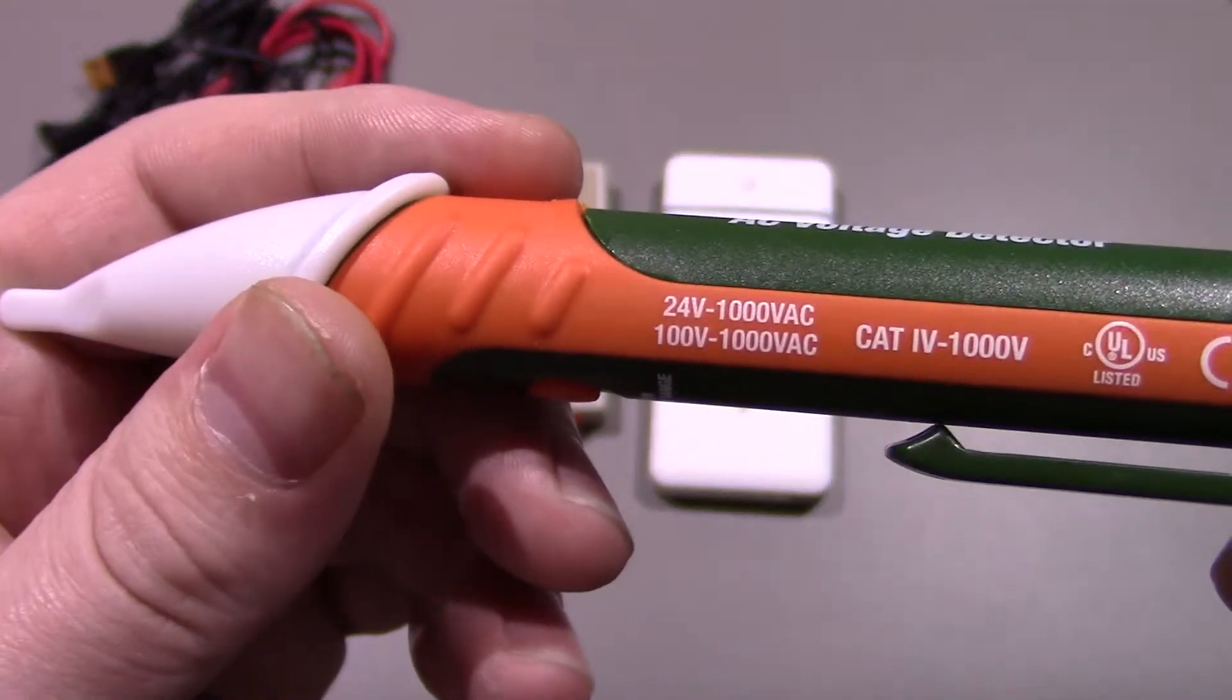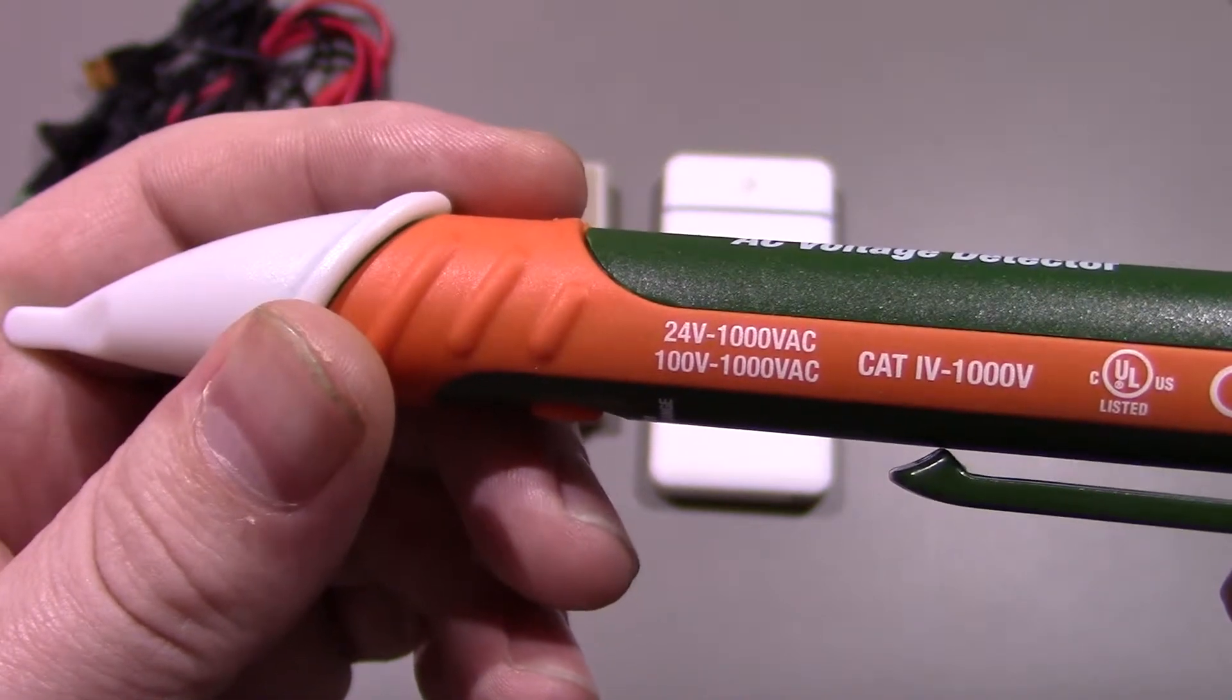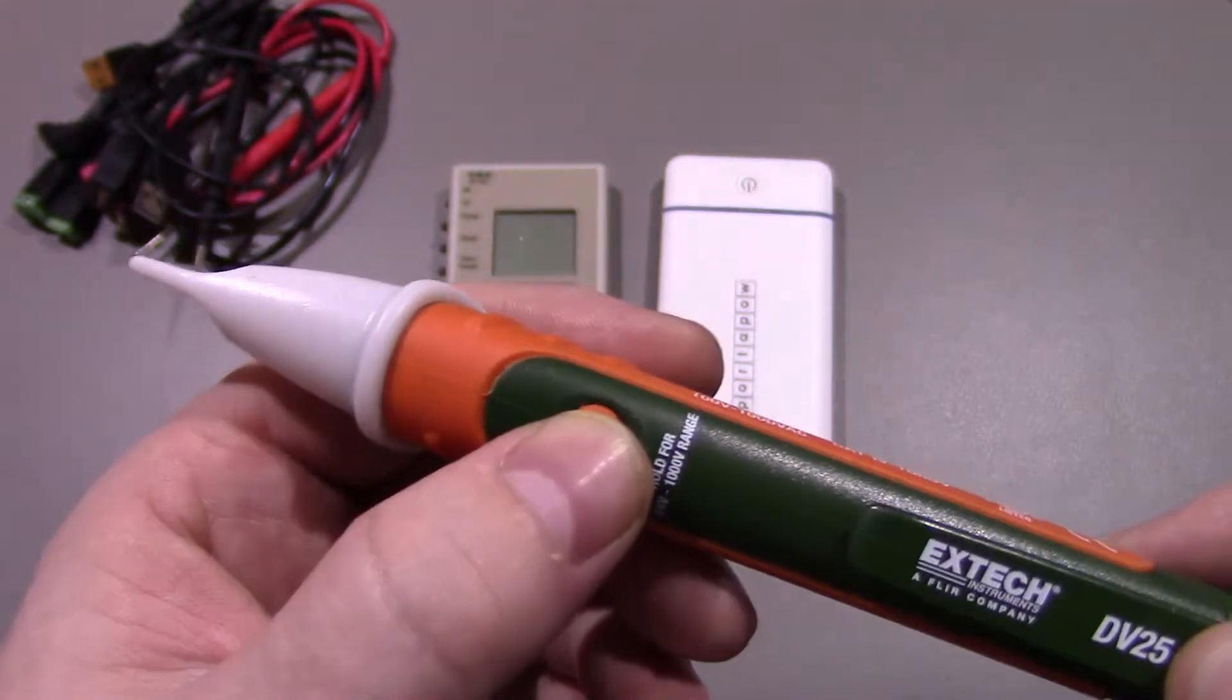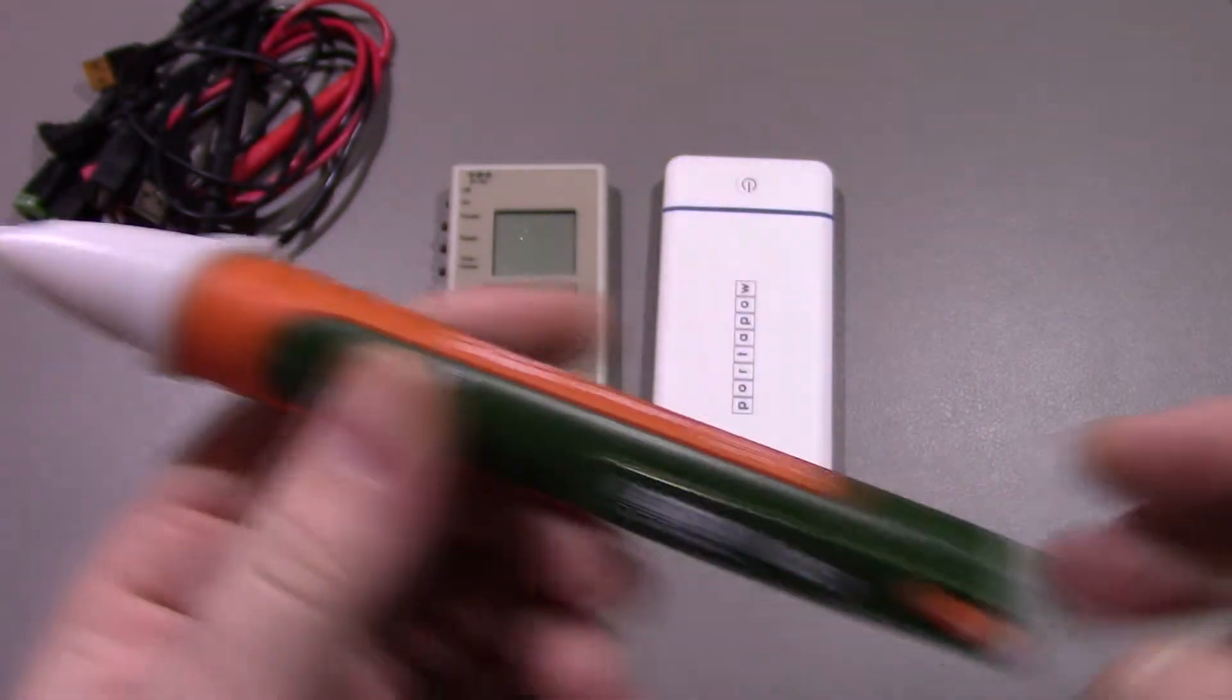We'll look at this one first. As you can see there, 24V to 1000V or 100V to 1000V. Basically, if you want to switch it to 24V, you press and hold that whilst using it.